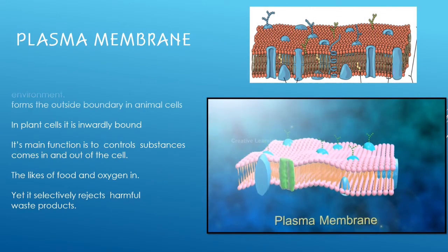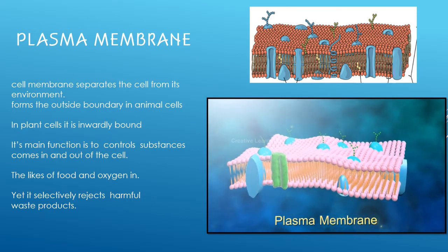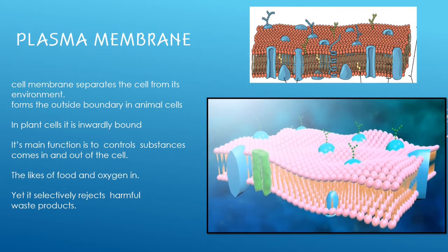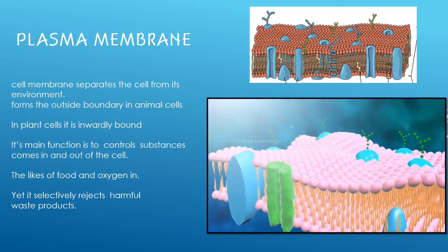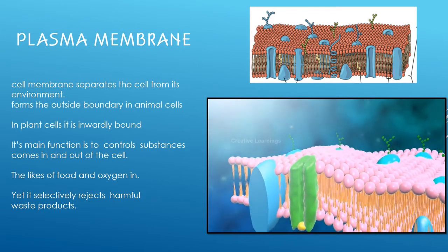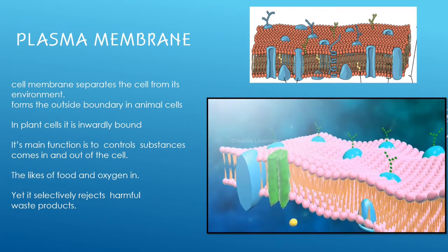The plasma membrane. Cell membrane separates the cell from its environment or separates one cell from another cell. It forms the outside boundary among animal cells, but in plant cells, it is inwardly bound. Its main function is to control the substances that come in and out of the cell. The likes of food and oxygen in, yet selectively rejects harmful waste products.